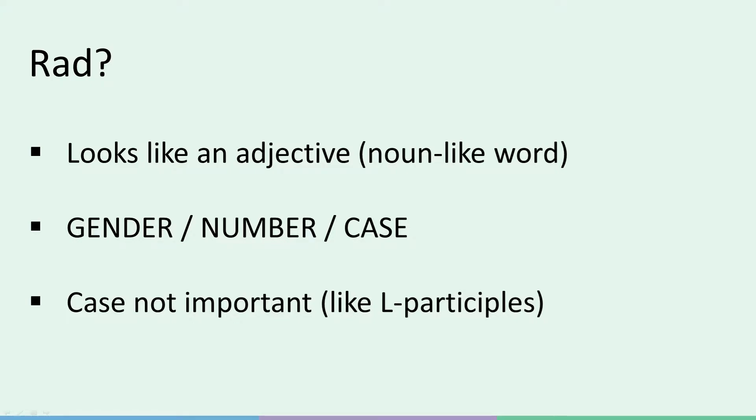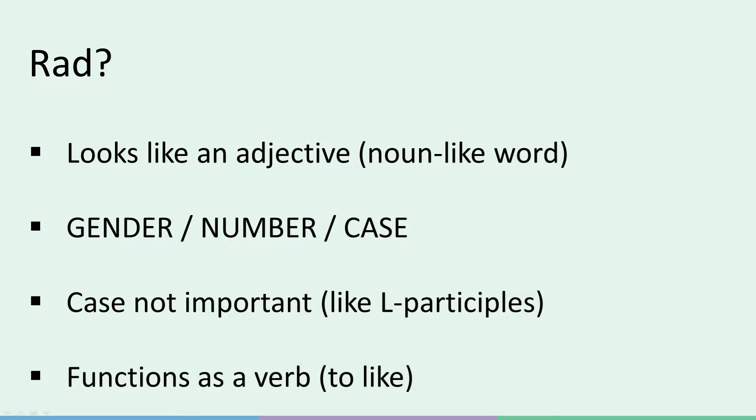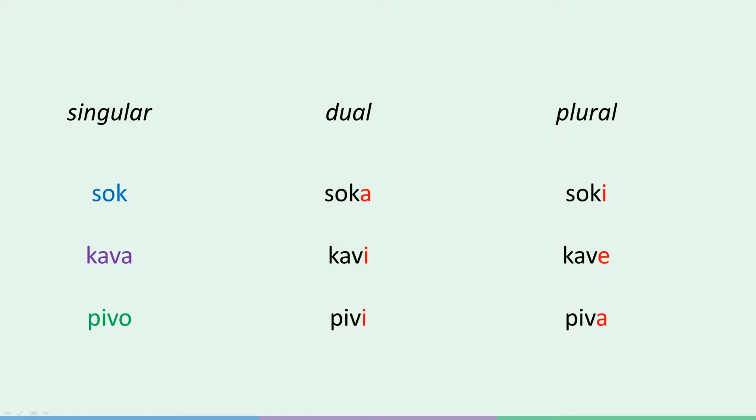L-participles, remember, are words that help us form the past and future tense. By its appearance, rad's company are nouns and adjectives. However, for some unknown reason, rad got fed up with hanging out with nouns and adjectives and decided it wanted to see what it's like to be a verb. And so it took on a verb's job — the English verb 'to like'. So rad is basically an adjective functioning as a verb. To avoid repeating what we've covered in previous lessons, I suggest you watch the video titled 'The Importance of 1-2-3'. It'll help you a lot with this lesson.